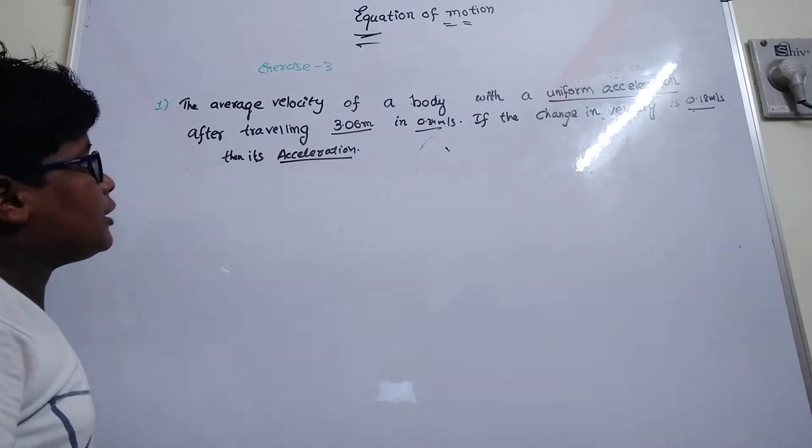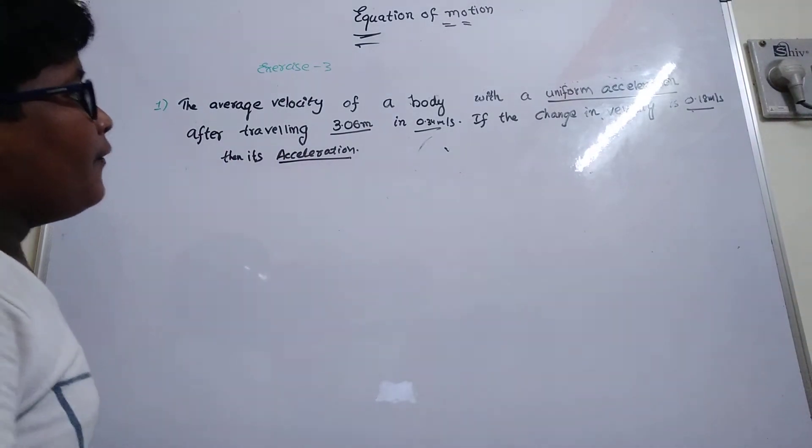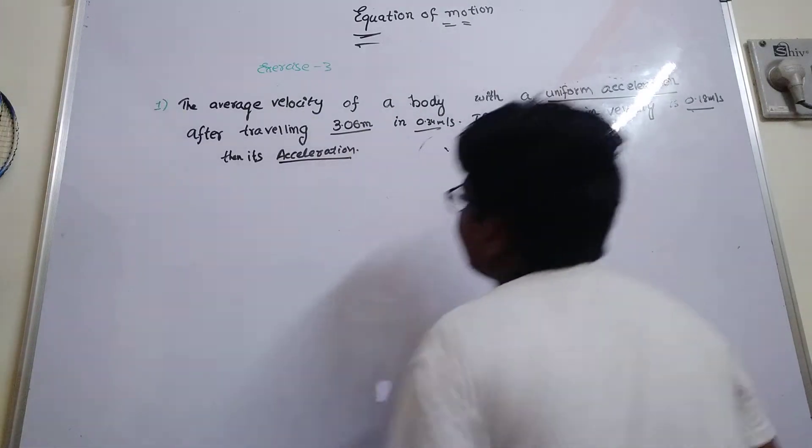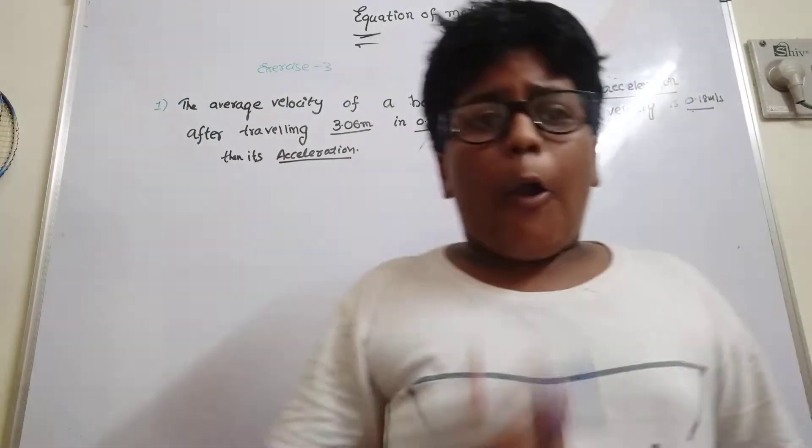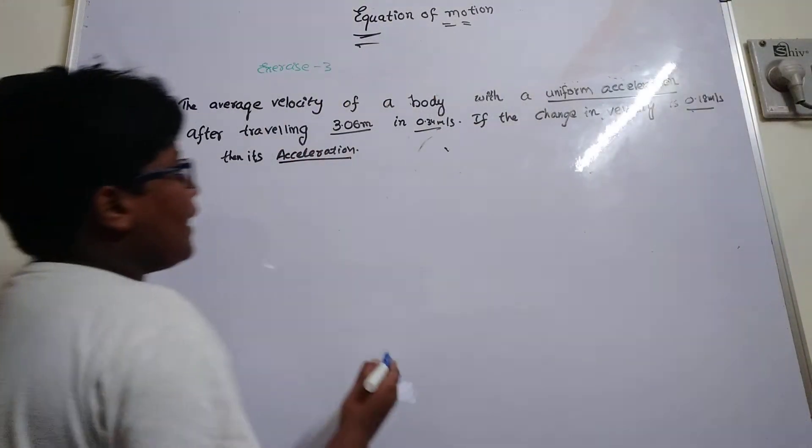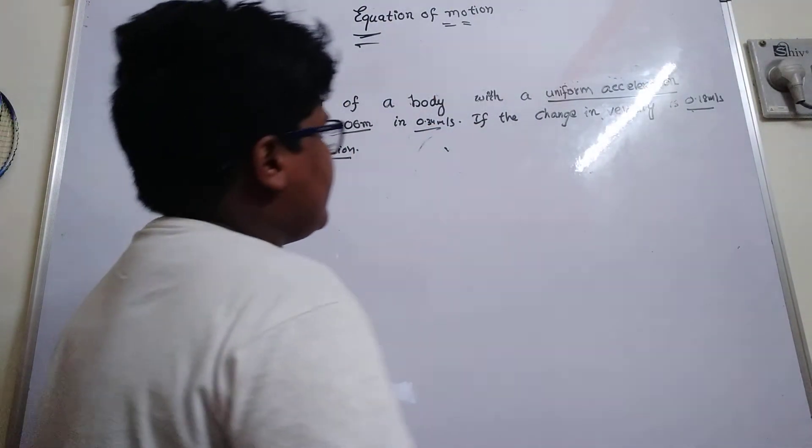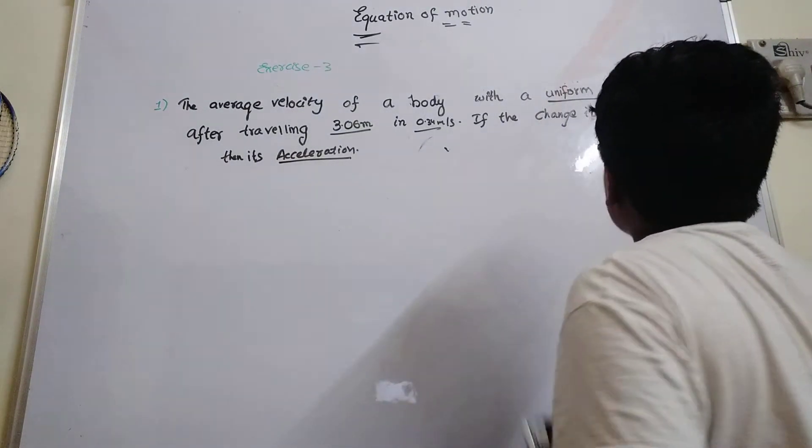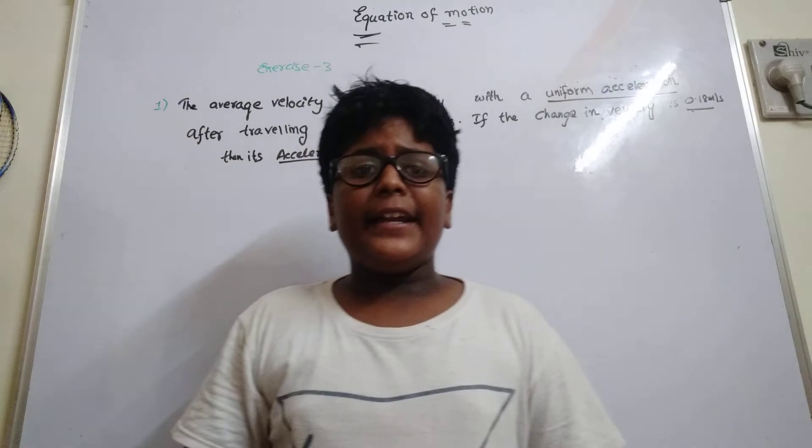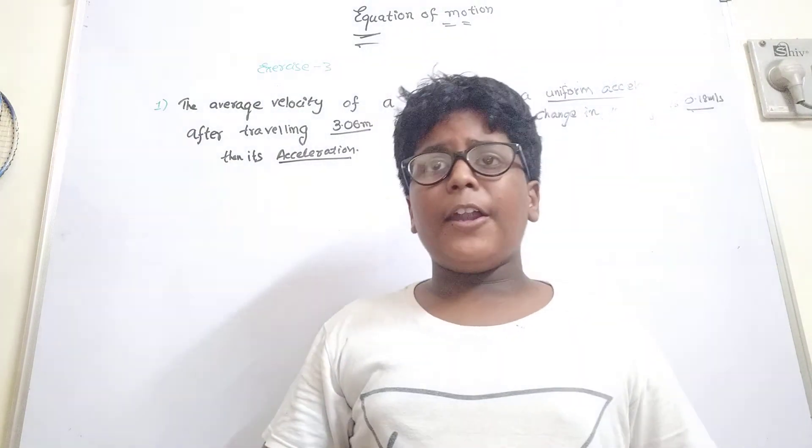The average velocity of a body with uniform acceleration after traveling 3.06 meters and in 0.34 meters per second, if the changing velocity is 0.19...